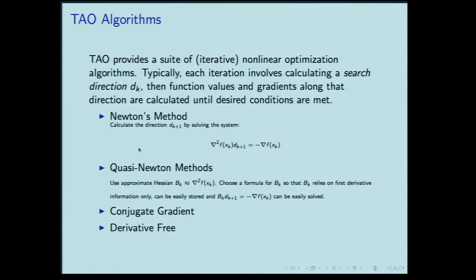TAU has fairly standard Newton methods, a variety of types that take into account the constraints. In addition, it has quasi-Newton methods, which approximate parts of the Jacobian without requiring you to compute the full Jacobian. And nonlinear conjugate gradient, which requires really no Jacobian information. It also has a powerful suite of derivative-free optimization techniques for problems where calculating the derivatives is too expensive or the functions are so noisy.